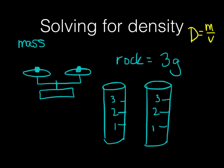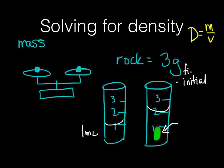We fill the graduated cylinder up with some water and take the measurement. I'll fill it up to 1 milliliter. Now I take that rock and drop it into the graduated cylinder. When I drop that rock in, the water level goes up to 2 milliliters. So I started with 1 milliliter, dropped the rock in, and now it's at 2 milliliters. I subtract the initial volume from the final volume: final volume minus initial volume gives me the volume of the rock. Final volume was 2 mL, initial was 1 mL, so the volume of the rock is 1 milliliter.